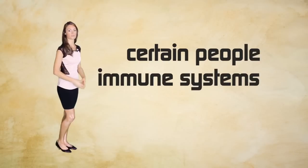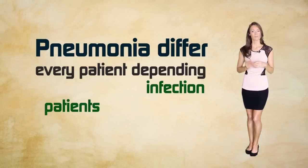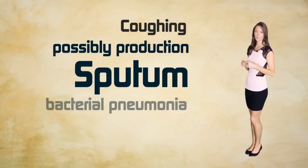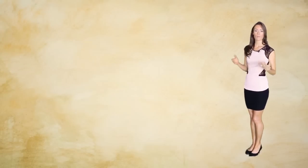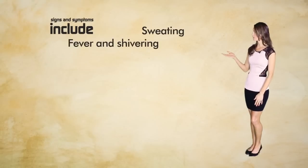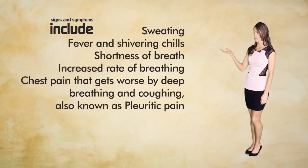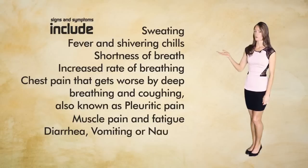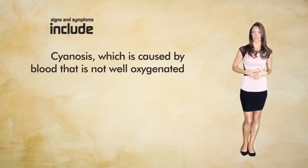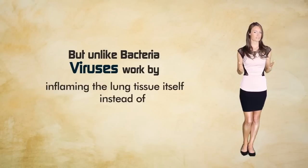Signs and symptoms of pneumonia differ in every patient depending on the cause and the patient's health. Common symptoms include coughing — in bacterial pneumonia the sputum is green, yellow, or red-brown, while in viral or mycoplasma pneumonia it is thin and whitish. Other symptoms include sweating, fever, chills, shortness of breath, increased breathing rate, pleuritic chest pain, muscle pain and weakness, diarrhea, vomiting, nausea, delirium or confusion, and cyanosis. In bacterial pneumonia, parts of the lungs may fill with fluid, whereas viruses cause inflammation of lung tissue itself rather than fluid consolidation.